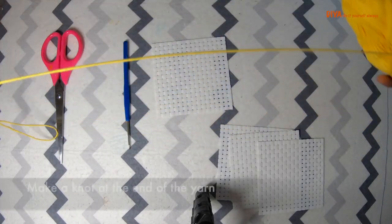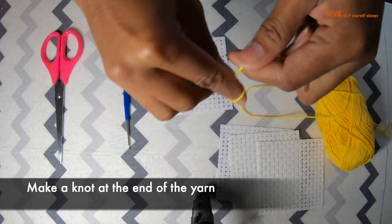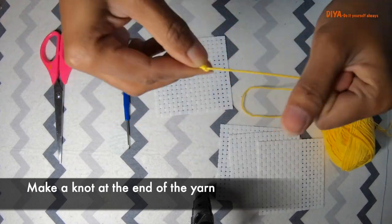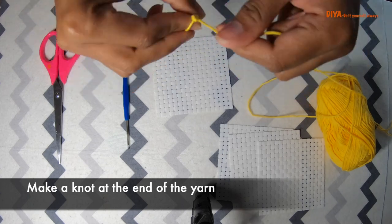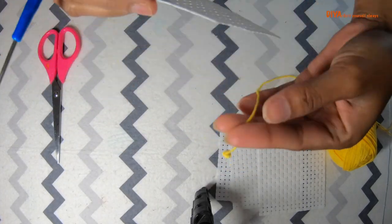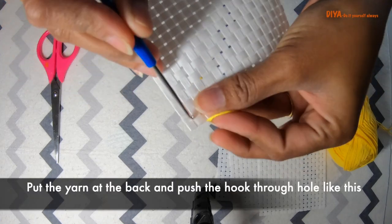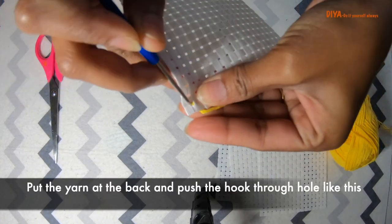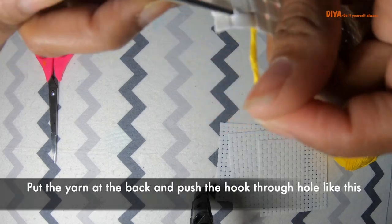The very first thing that you have to make sure is you put a knot on yarn so that it will not come out. Now I'll show you how to attach yarn to crochet hook. For this, put the yarn at the back and push the hook through hole like this. Grab yarn from behind and push it through hole.